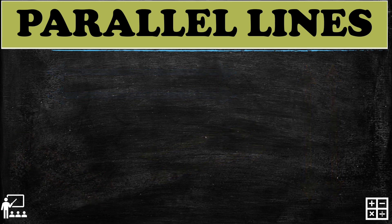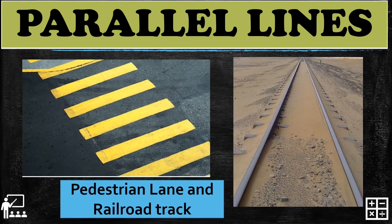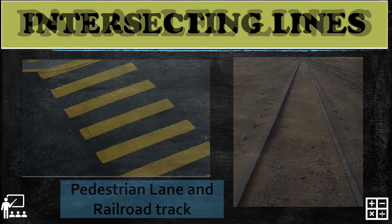In real life, you will observe parallel lines in a pedestrian lane and a railroad track. As you can see in the figure, the lines of a pedestrian lane and a railroad track are parallel lines because the lines do not meet.